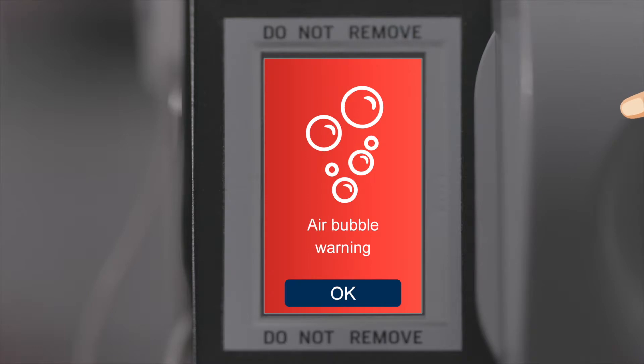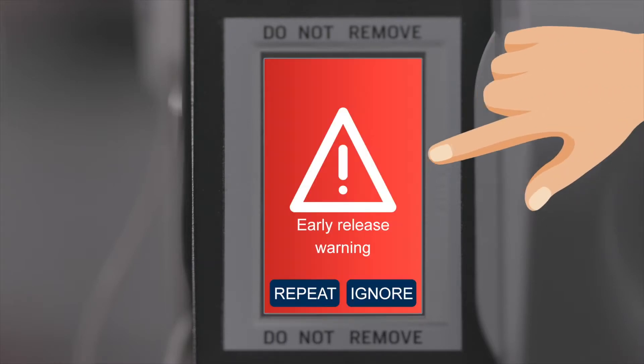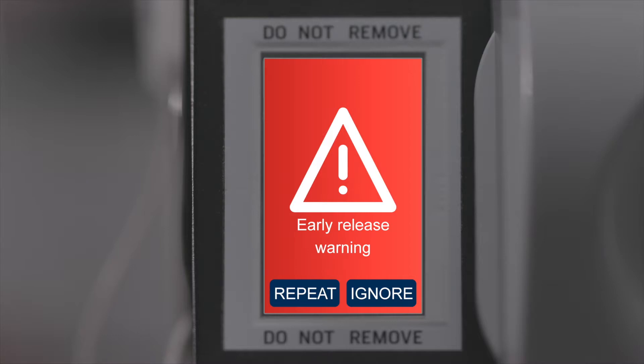Air Bubble Detection: This safety feature detects air inside of the tubes to prevent that air is injected into the breast muscle. Early Release Warning: We emit a sound if the chicken is released too early. It is possible to either repeat the injection or ignore the warning.